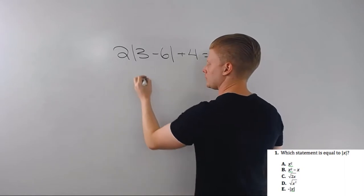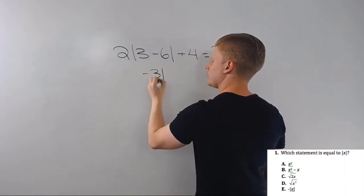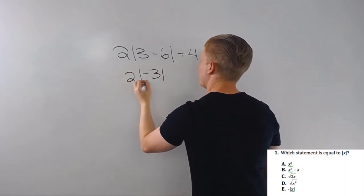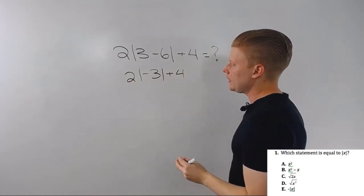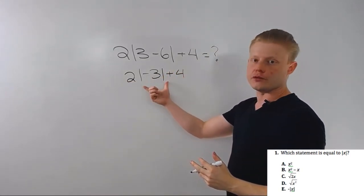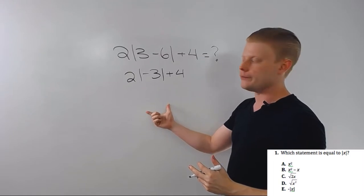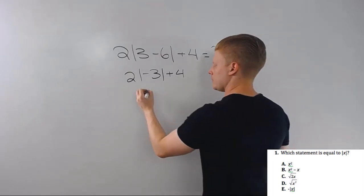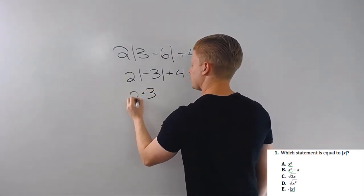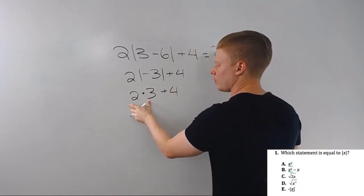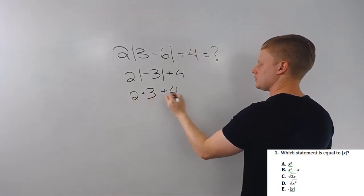Three minus six is negative three, right? Then we still have our absolute value bars. To get rid of the absolute value bars we make it positive, right? So negative three becomes three times two plus four. We just follow the order of operations: two times three is six.